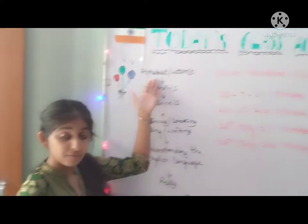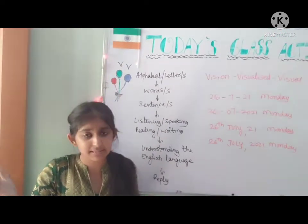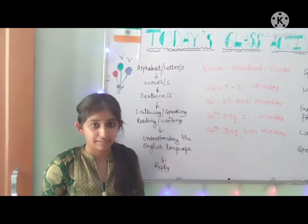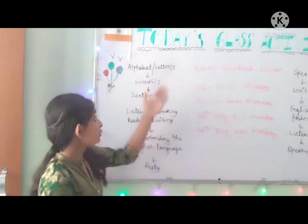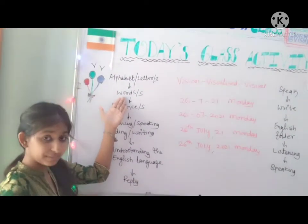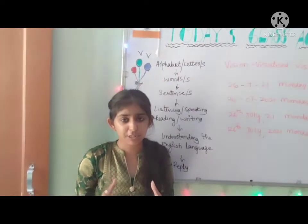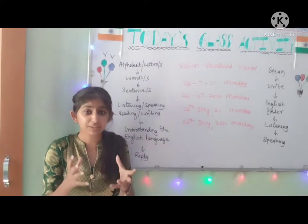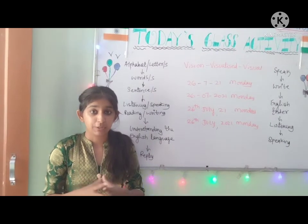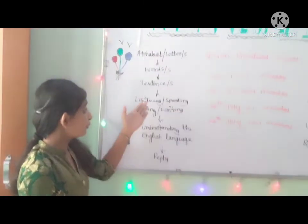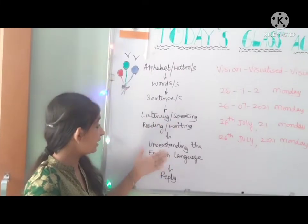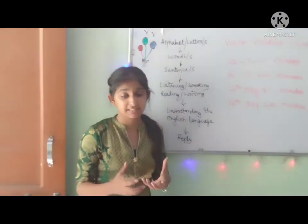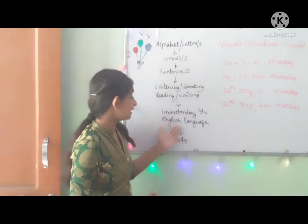First of all, the first thing is Alphabet, which means Varn Mala, which we call in Hindi — A, B, C, D, all the way to Z. So alphabet means the full set of letters. From that alphabet, we will make a shabd — a word. So listen to this whole thing first, because when we listen, we will make words in our mind. Try to speak a word, because when we learn a language, we listen first, then try to speak, then try to read, then try to write. If you do this whole activity, you will understand English properly. It means — understanding the English language and being able to give a reply.